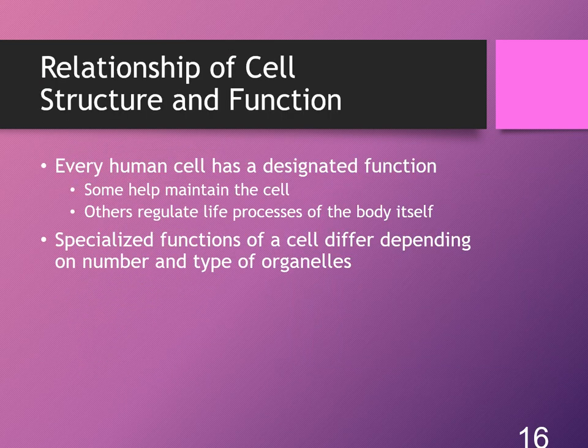When it comes to the structure of a cell, form follows function. We only have to think about what the cell's job is to understand why it's structured in a specific way. Heart cells, for example, work together to beat in unison and push blood throughout the body, so those cells are going to have a lot more mitochondria because they need to do a lot more work. Another example is the flagella of the sperm, whose job is to travel through the uterus and into the fallopian tube to find and fertilize the egg.